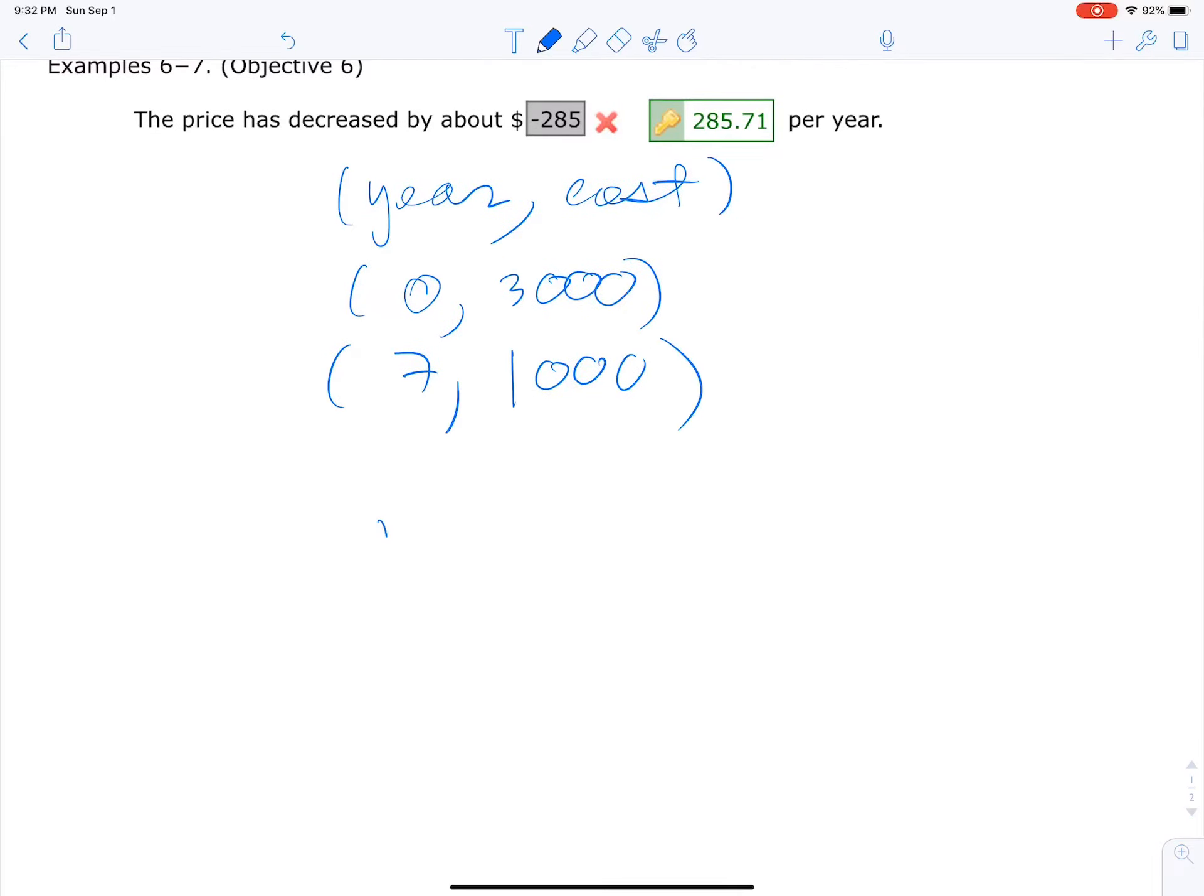So there's your slope. It's gonna be 3000 minus 1000 divided by 7, so 2000 divided by 7.